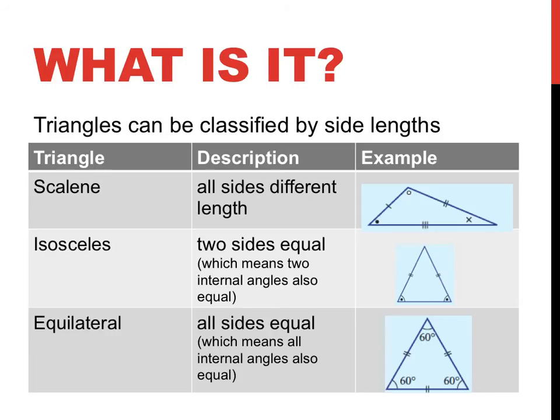So you can classify triangles either by their side length or by their interior angles. Now you guys know this. You have been doing classifying triangles classified by side lengths since year seven. Scalene, all sides are different length. Isosceles, two sides are equal and if two sides are equal it means that two angles in there are also equal.